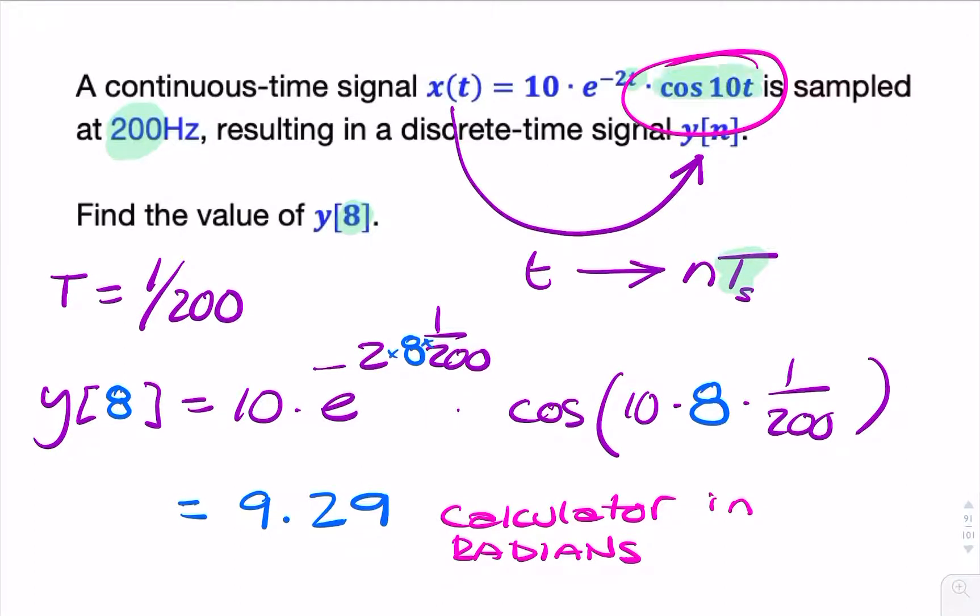So remember, whenever you have a trigonometric identity, your calculator needs to be in radians. So depending on the number of decimal places required in the question, that would be your final answer.